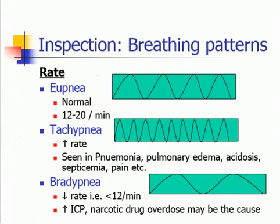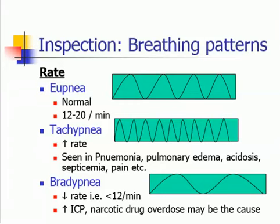Inspection of breathing patterns includes assessment of rate. Eupnea is normal breathing with a rate of 12 to 20 breaths per minute. Tachypnea involves increased breathing rate, seen in pneumonia, pulmonary edema, acidosis, septicemia, or pain. Bradypnea involves a decreased breathing rate of less than 12 per minute, and is due to increased intracranial pressure or narcotic drug overdose.